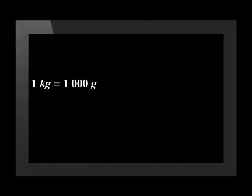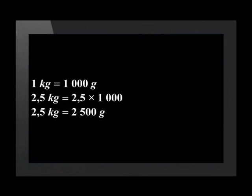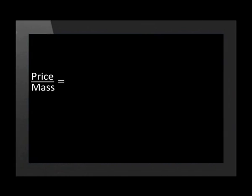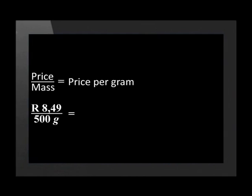Let's do this together. The first step is to change all the measurements to be in the same unit. Let's convert the kilograms to grams. There are 1,000 grams in a kilogram. To change 2.5 kilograms to grams, we multiply 2.5 by 1,000, which means 2.5 kilograms equals 2,500 grams. Using the same method, 5 kilograms multiplied by 1,000 equals 5,000 grams. Now that all the masses are in grams, let's do the price comparison by dividing the price by the mass to get a price per gram. Starting with the smallest bag: 8.49 divided by 500 grams equals 0.01698 rand per gram — roughly 1.5 cents per gram.